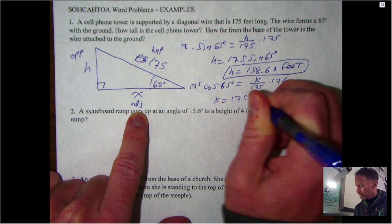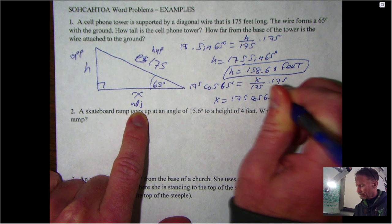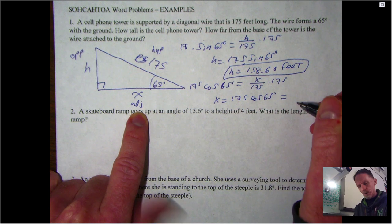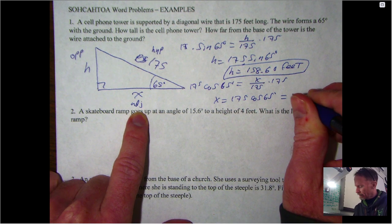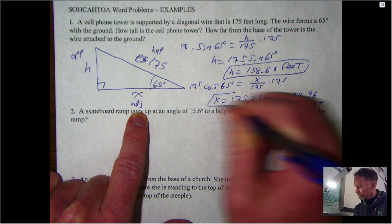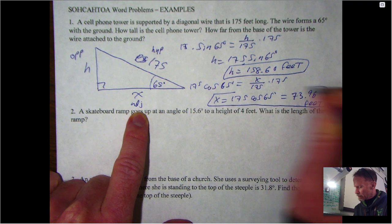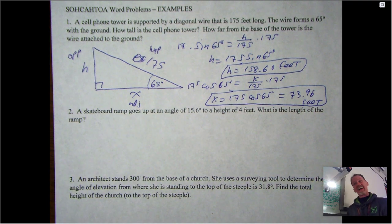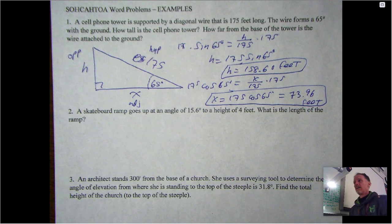So cosine of 65 is x over 175. Same deal - multiply again. So x is equal to 175 cosine 65, and that would be equal to 73.96 feet. So the actual finding of the values is the exact same thing we've done before; you just got to draw the picture to do that.